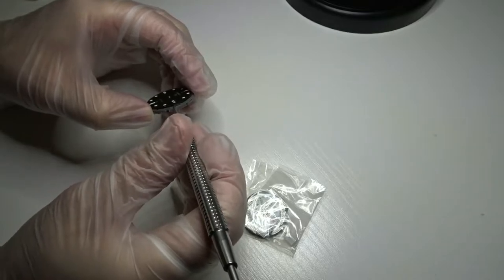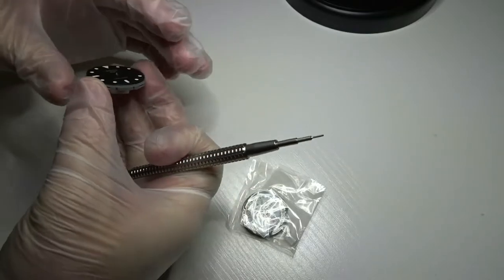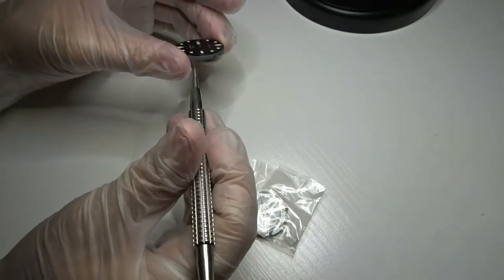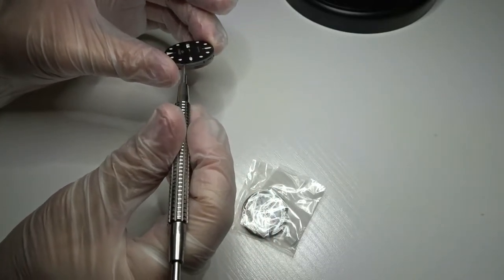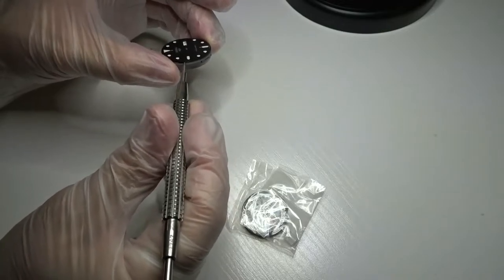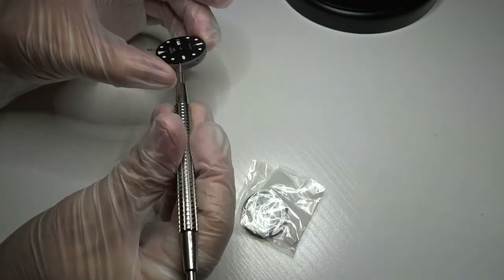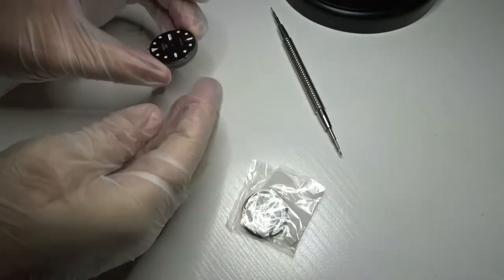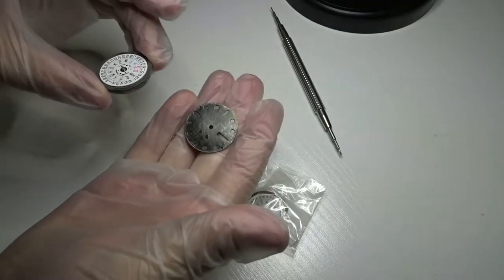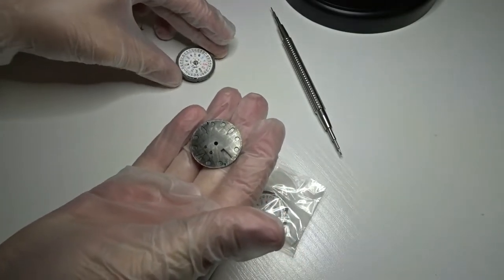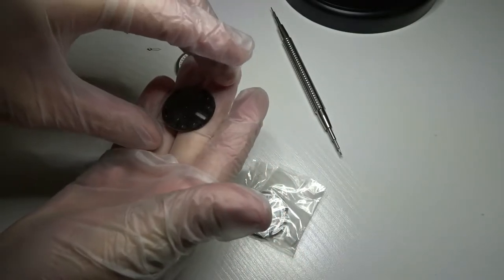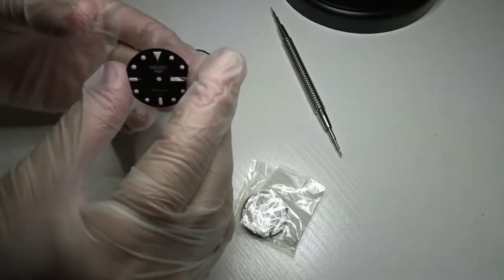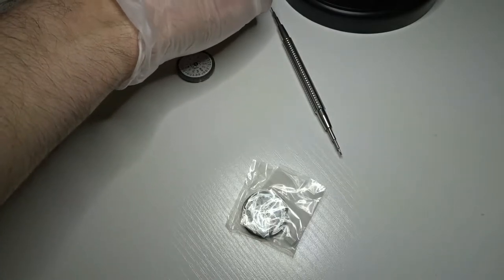So I do that on the other side too. I'm just trying to be careful, I don't want to scratch the dial or damage it. So now that that's off, that's the underside. There's actually two metal posts there, I don't know if you saw it, but that's how the dial attaches to the movement.